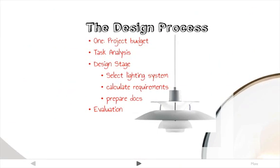There are several steps to the design process. First, establish the project lighting cost and project an energy budget. Next, do the task analysis: what do your clients need, and what's going to be happening in the space? Then move into the design stage — selecting the lighting system, calculating all the requirements, and preparing the drawings and specifications. Finally, you do the evaluation.